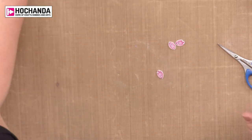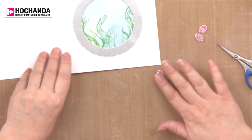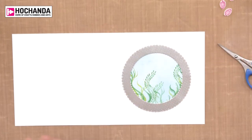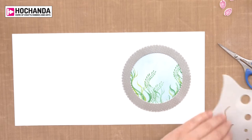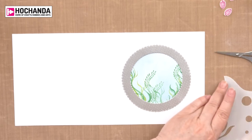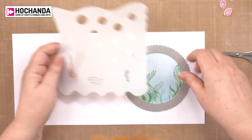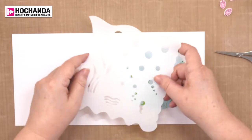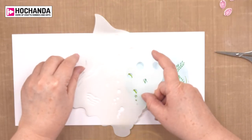While they're cooling down let's go back to the card. It's a little bit naked on the front so what we have is this stencil, our under the sea stencil, and we can add some bubbles in the background.